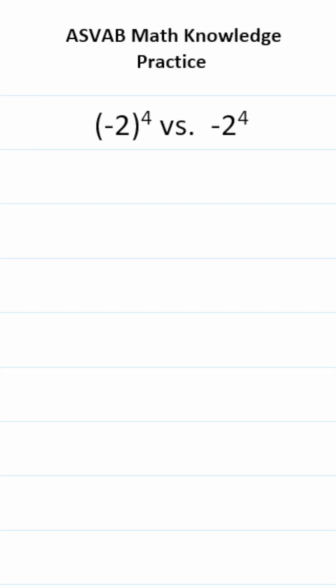In this video, I quickly want to address something that can be a source of confusion in the math knowledge subtest of the ASVAB and PyCat. Specifically, let's talk about negative numbers raised to powers with parentheses as opposed to not with parentheses.